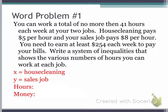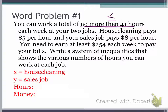In regards to hours, it tells us that we can work a total of no more than 41 hours. When they say no more than 41 hours, 41 is pretty much our limit. So that means we're going to use the less than or equal to sign. We don't know exactly how many hours we're working for each job, so we're just going to say X plus Y is less than or equal to 41.